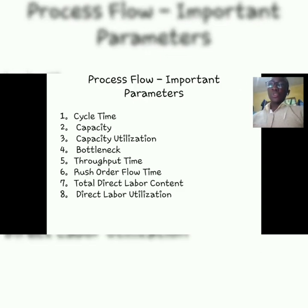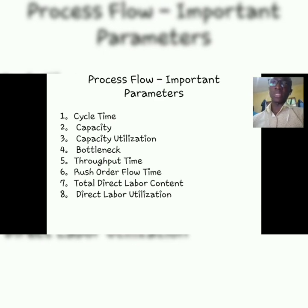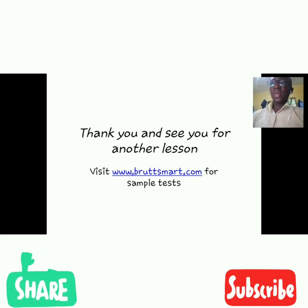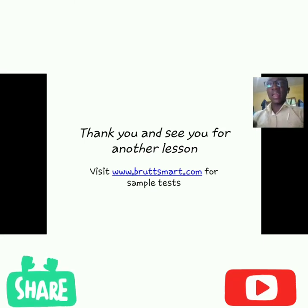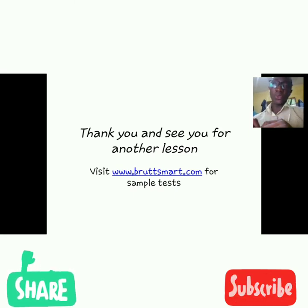Every process diagram has important parameters. In our next video, we'll look at cycle time, capacity, capacity utilization, the bottleneck, throughput time, rush order flow time, total direct labor content, and direct labor utilization — which involve some calculation, so get your calculators ready. This is where we end today's video. Thank you, and see you for another lesson. The site is broodsmart.com — go and register, and when we upload the questions, we will let you know.